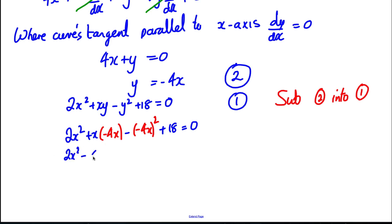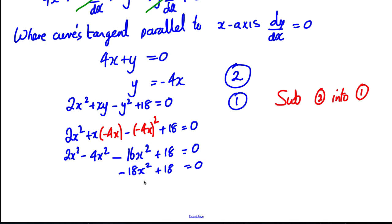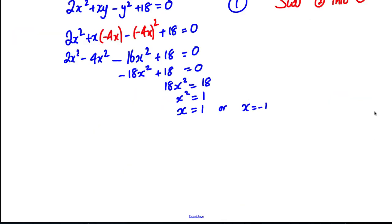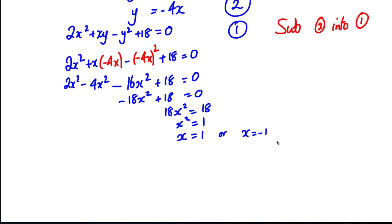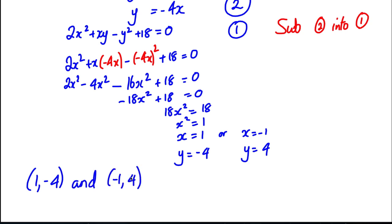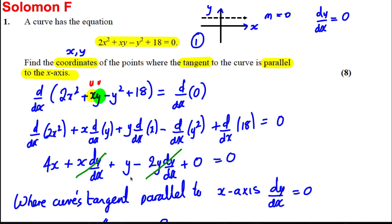Multiplying out gives 2x² − 4x² − 16x² + 18 = 0, which simplifies to −18x² + 18 = 0. Adding 18x² to both sides: 18x² = 18, so x² = 1. Taking square roots, x = 1 or x = −1. Since y = −4x, when x = 1, y = −4, and when x = −1, y = 4. So the coordinates are (1, −4) and (−1, 4).